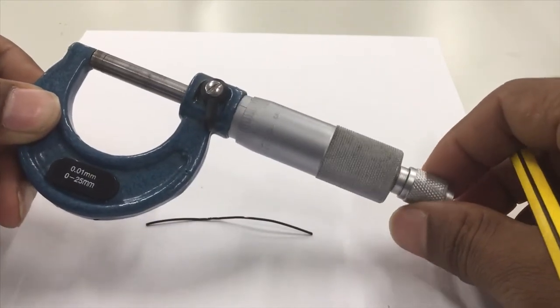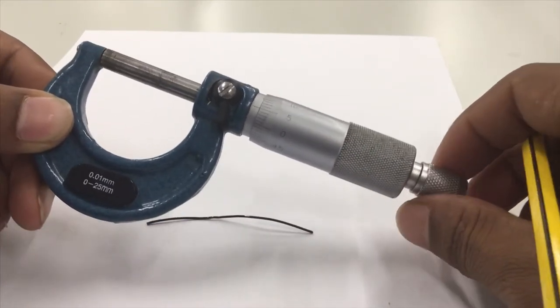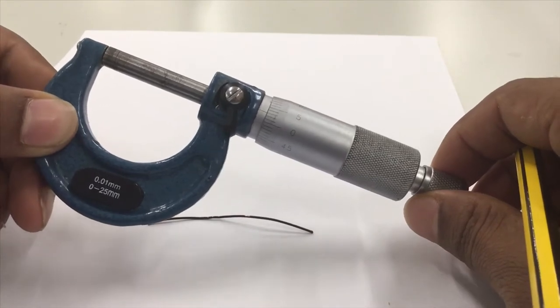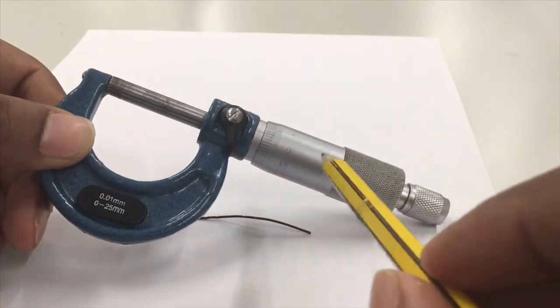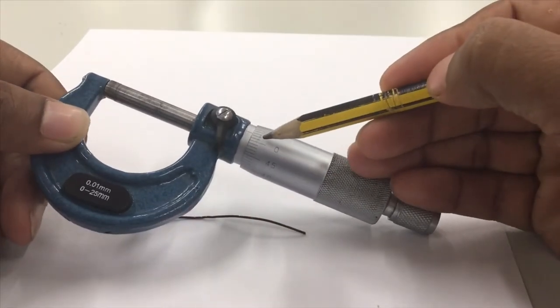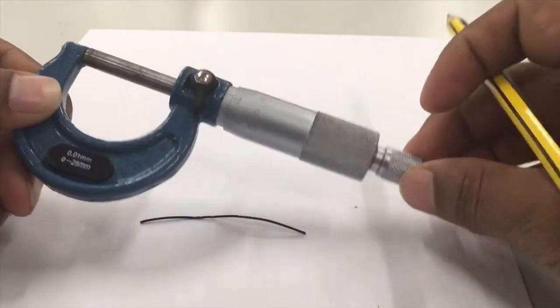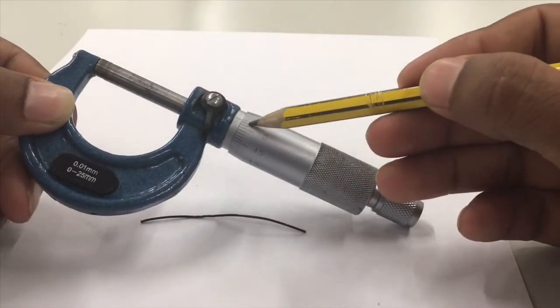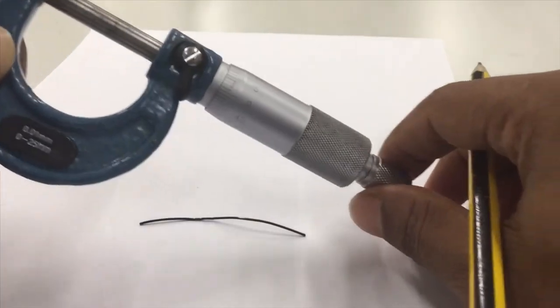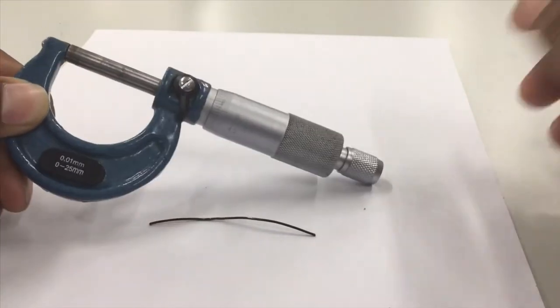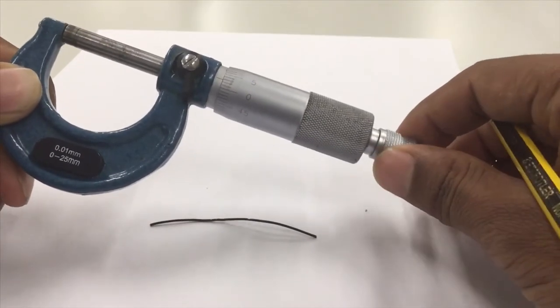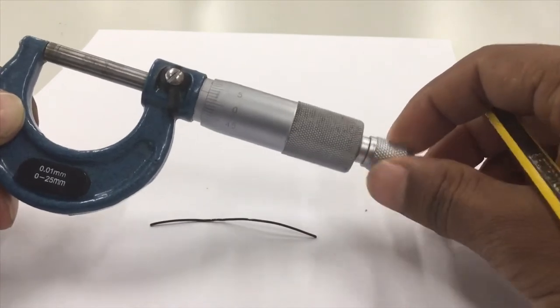So the main scale zero and the circular scale zero has to coincide, but here it is not coinciding. So it means there is a zero error. You can see the first line, second line, first, second and third line. The third line is coinciding with the zero. So it is plus three error. It has a plus three error now.